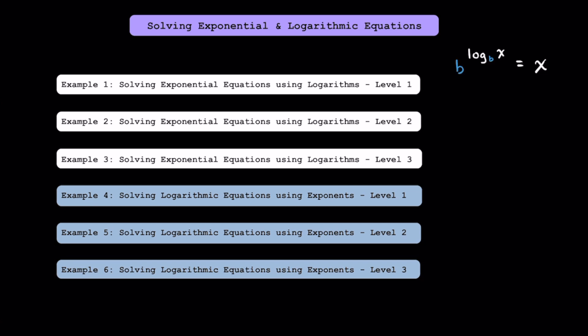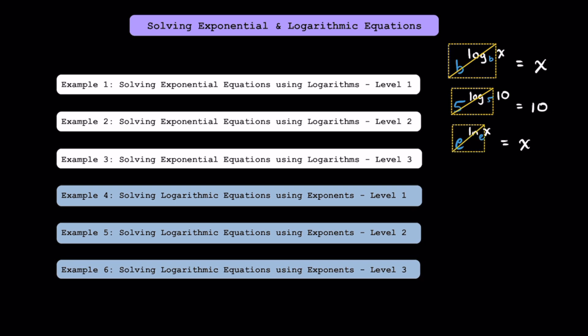First, b to the log base b of x power is always going to equal x. When the base of the exponent and the base of the log match, they cancel out. For example, if you have 5 to the log base 5 of 10, this cancels out and you're just left with 10. Similarly, when you have e to the ln of x, since ln of x has a base of e, these will cancel out and you're left with x.